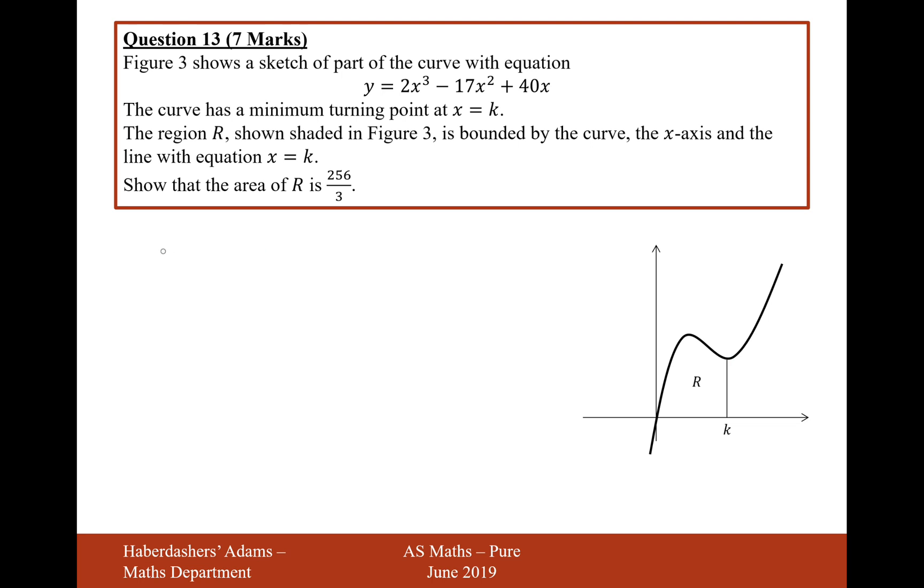Let's first of all find the minimum points. The minimum points will be found by differentiation. So, first of all, dy/dx equals 6x squared minus 34x plus 40 equals 0. So, let's now divide by 2, so we get 3x squared minus 17x plus 20 equals 0. Let's now factorise 3x and x,